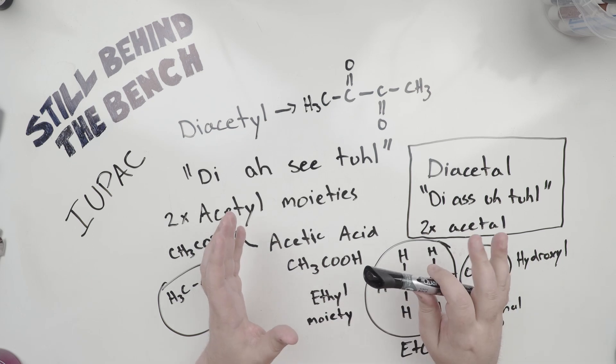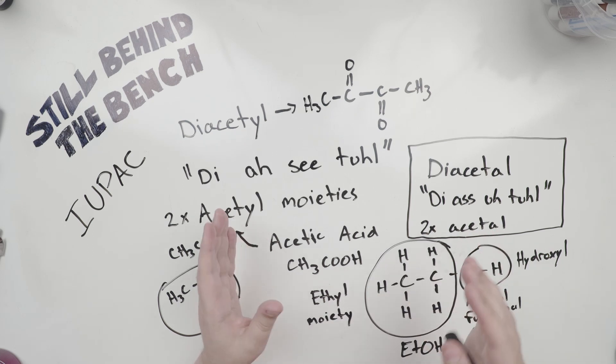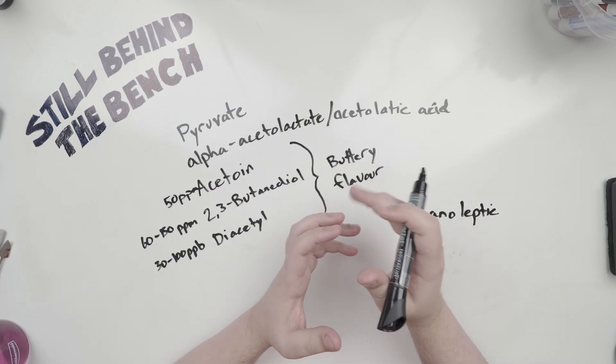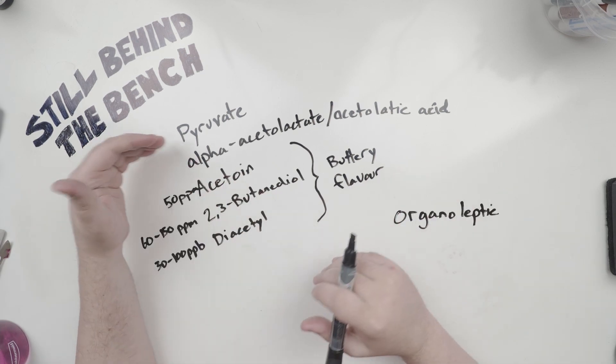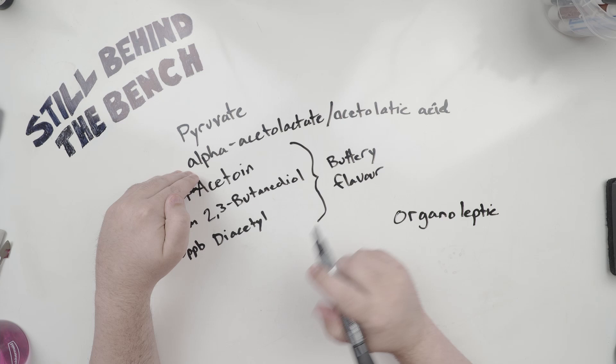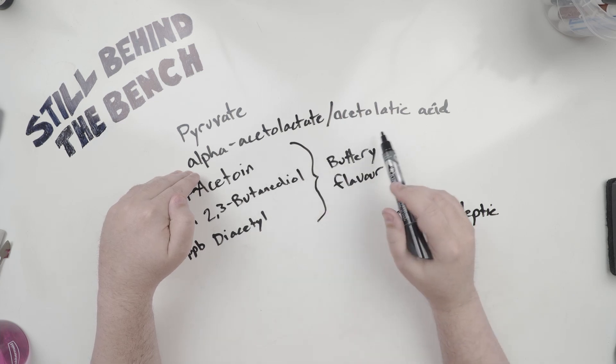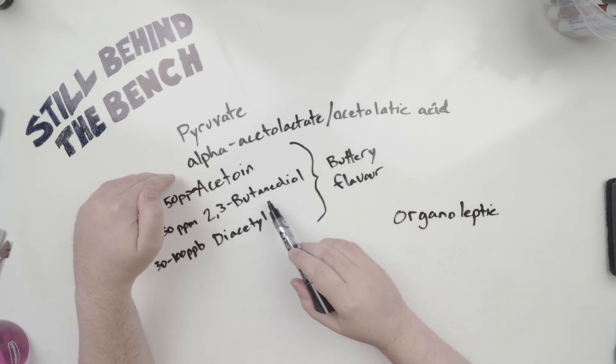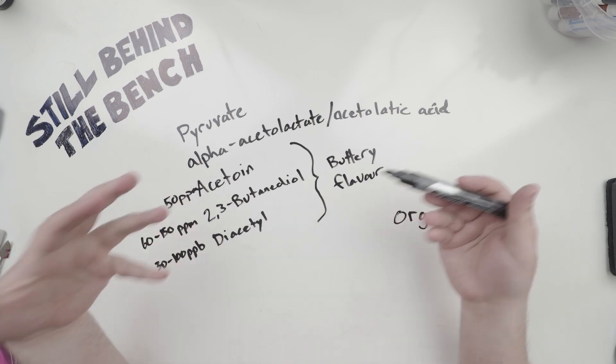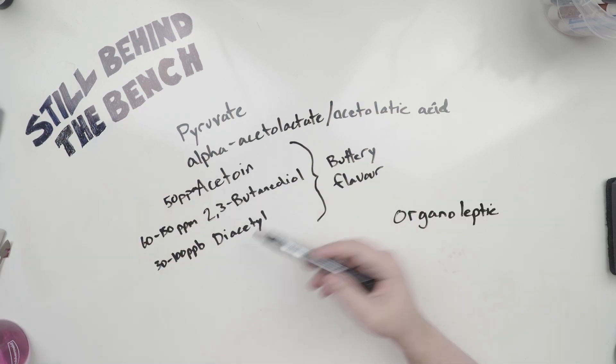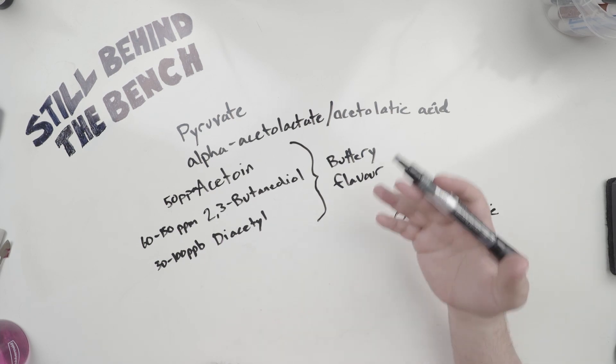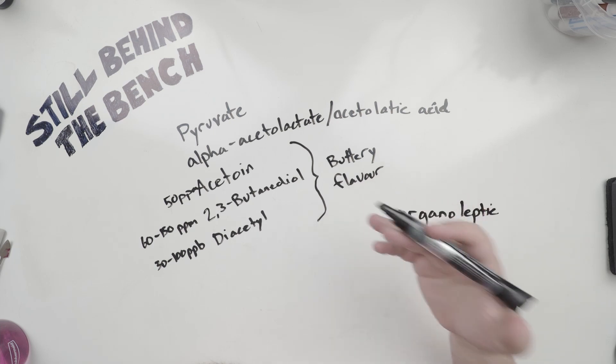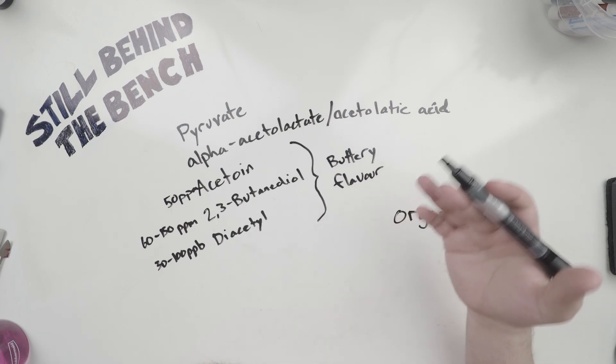So now we can talk about the other major compounds that are going to be present around the same time as diacetyl. The other major compounds that are present within this sphere of relationships are pyruvate, alpha-acetolactate or alpha-acetolactic acid, acetoin, 2,3-butanediol, and then diacetyl. Now these last three have what you would consider a buttery flavor. In fact, they are what gives butter its flavor.